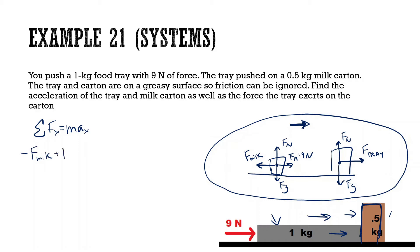Plus force of the tray going to the right, equal to mass of milk plus mass of tray times acceleration. Force applied equals 9. We don't know what force of milk or force of tray are individually.